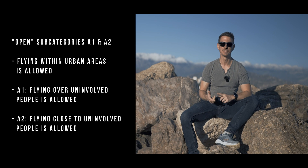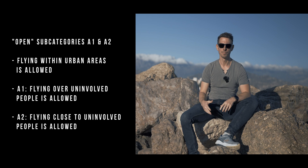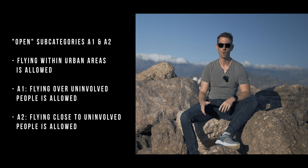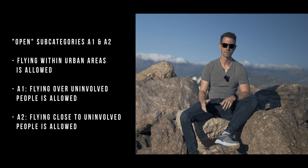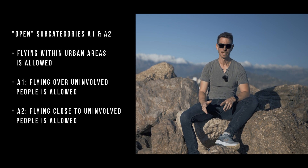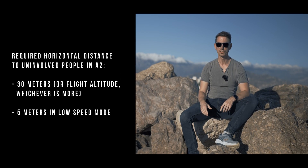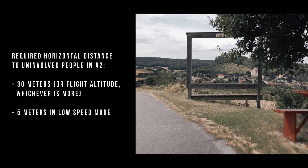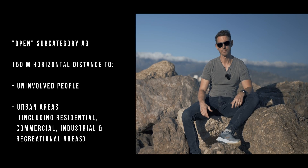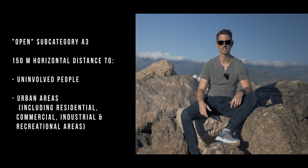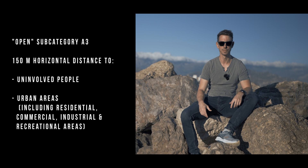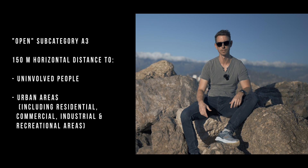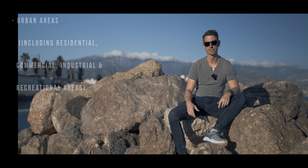Subcategories A1 and A2 allow you to fly within urban areas. A1 allows you to fly over uninvolved people, while A2 only allows you to fly close to people — defined as 30 meters in normal mode and 5 meters in low speed mode. A3, on the other hand, requires you to stay at least 150 meters horizontally from uninvolved people and urban areas.